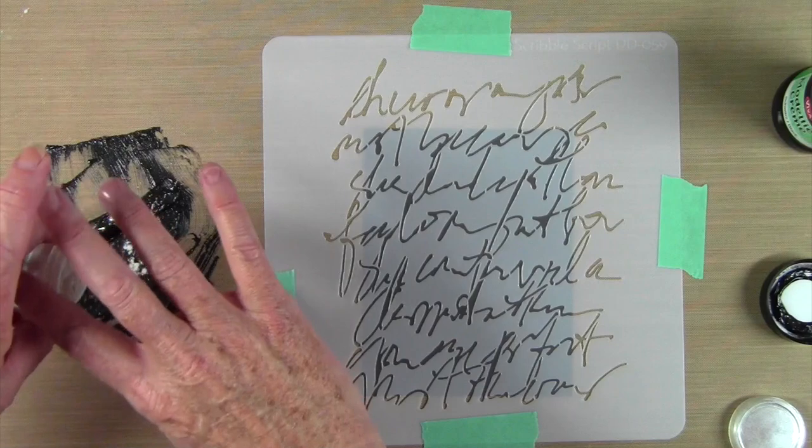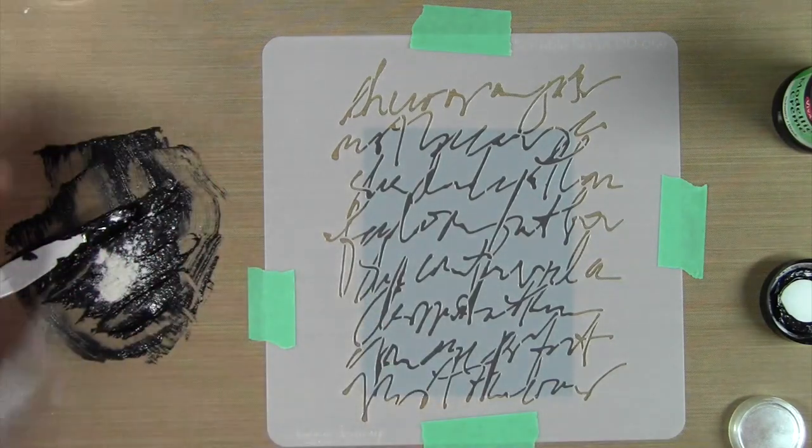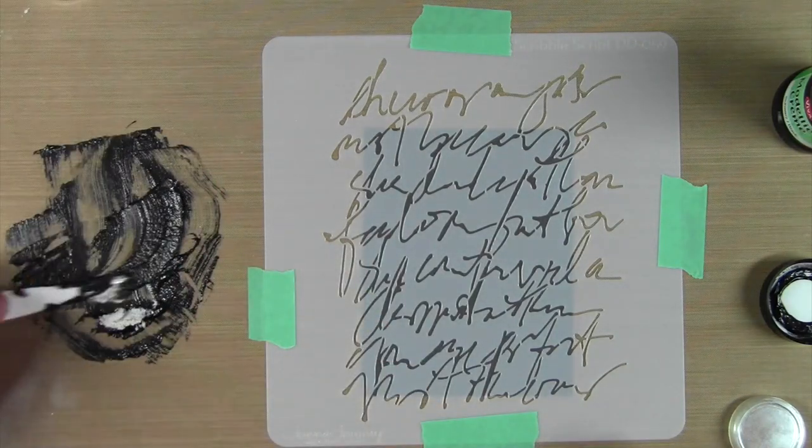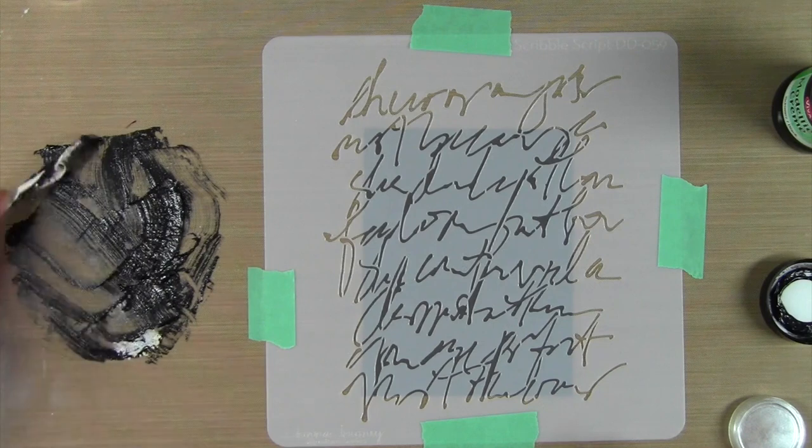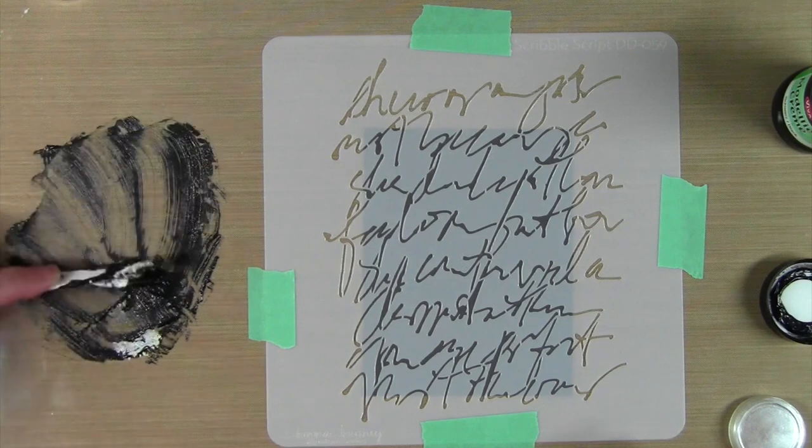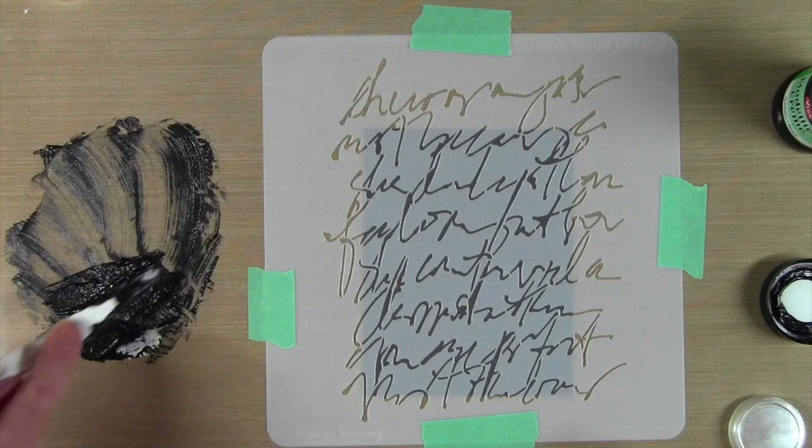Now that I have that mixed in really well, I'm going to add a little bit more. And again, I'll just be using my palette knife to smooth that out, and pulling in that paste more towards the powder so I can mix it a little bit better.